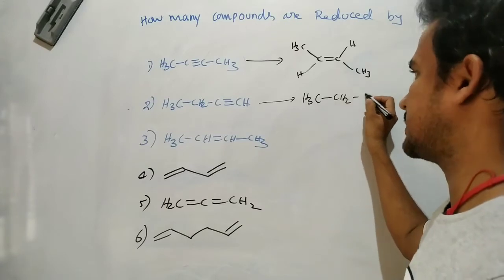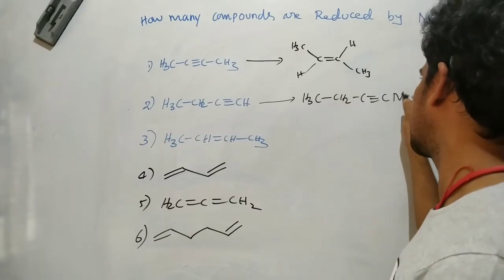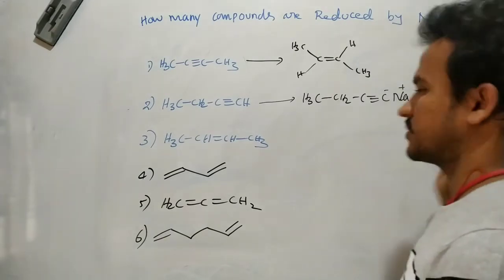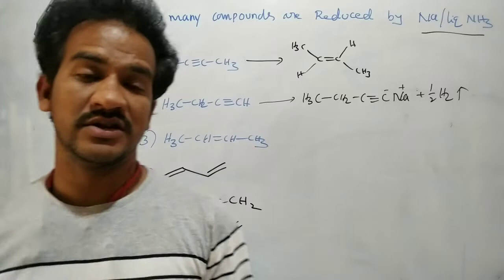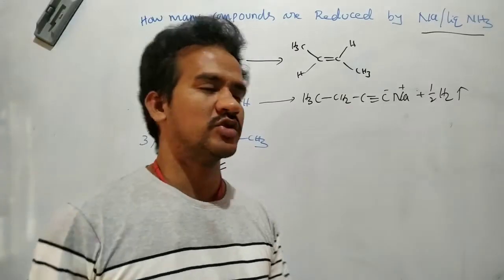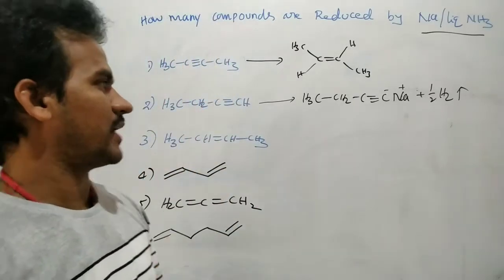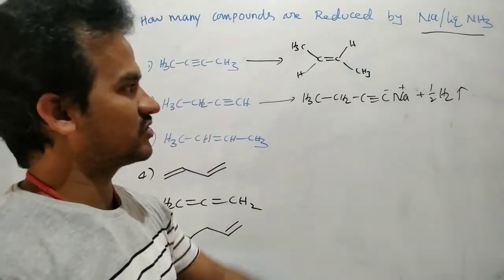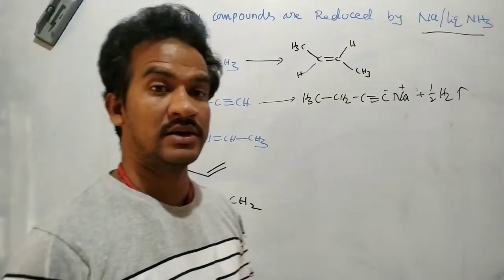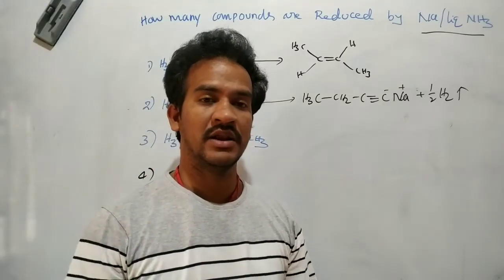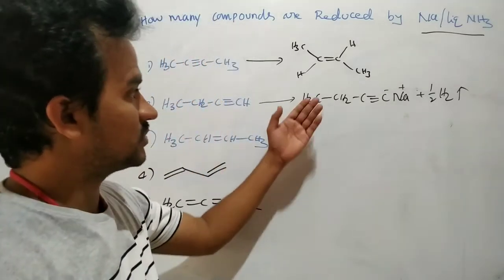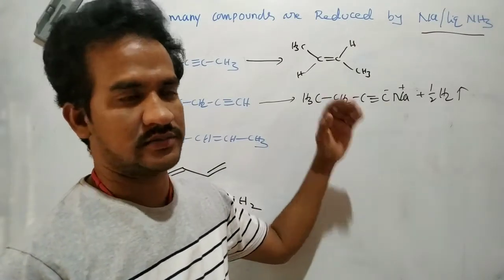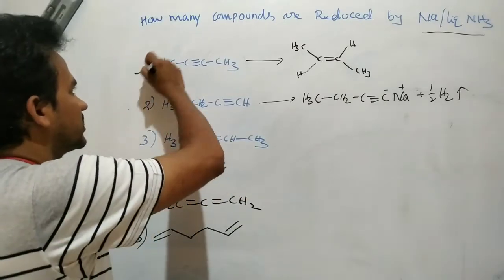In this next case, this compound (1-butyne, a terminal alkyne) is not reduced but can react with sodium, giving H2 gas. There is a reaction between the terminal alkyne and sodium liquid ammonia, but there is no reduction of the triple bond — just an acid-base reaction, because sodium is an alkali metal with alkaline nature. Reaction is there, but no reduction.